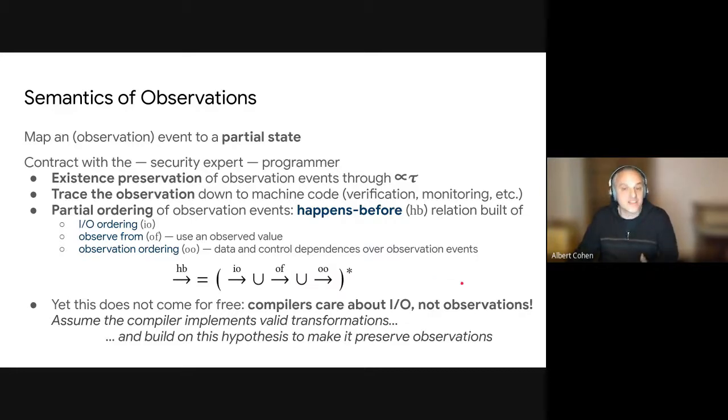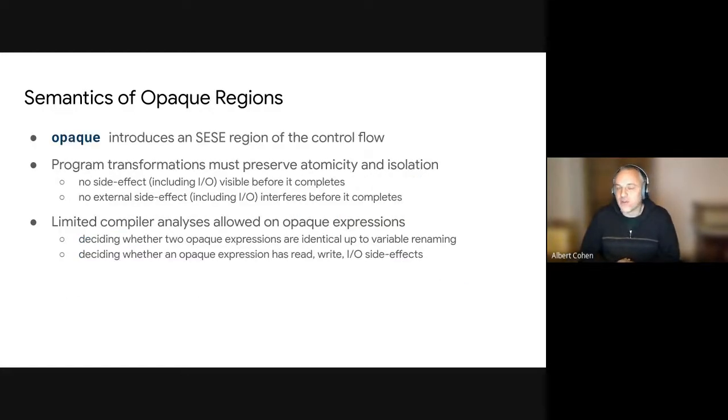The problem here is that I/O is preserved by transformations, but the compilers like LLVM have no clue what an observation is. I mean, they are not supposed, they are not meant to preserve observation. Opacity is the way we are going to tweak the compiler in a robust way, in a sound way, if you want.